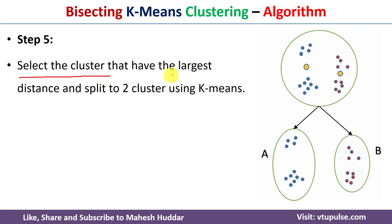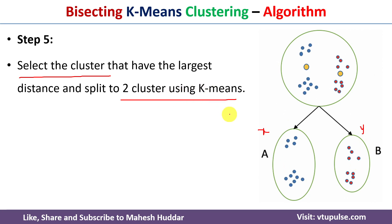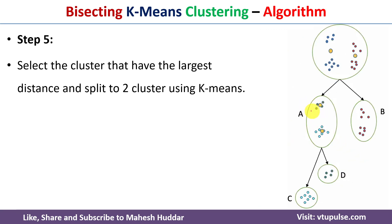In step five, we select the cluster with the largest sum of squared distance. If the sum of squared distance for A is x and for B is y, and if x is greater than y, we select cluster A and divide it into two clusters using k-means. If B has a larger sum of squared distance, we select B and divide it into two clusters. Assuming A has the larger value, we apply k-means on cluster A and divide it into two clusters — say C and D.